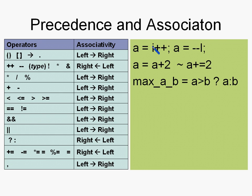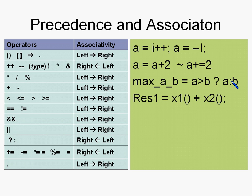The next is the conditional operator, which is essentially an if-else expression. For example, instead of writing: if (a > b) max_a_b = a; else max_a_b = b; — you can write it as a conditional expression. The condition is evaluated first; if true, the left side of the colon is evaluated; if false, the right side of the colon is evaluated.